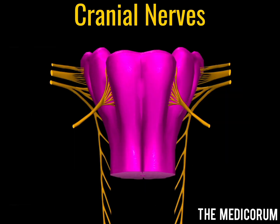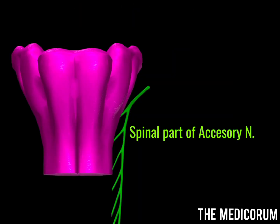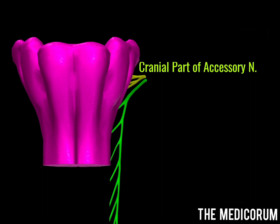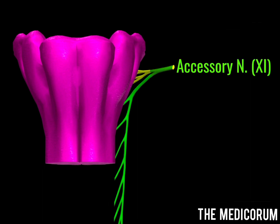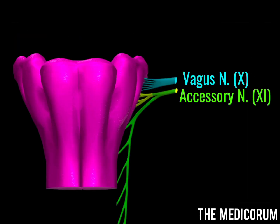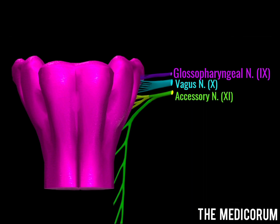Medulla oblongata gives origin to many of the cranial nerves. The spinal part of the accessory nerve mostly arises from the spinal cord, but some of its part arises from the medulla oblongata, and the cranial part totally arises from medulla. Both the spinal and cranial parts merge to form the accessory nerve, which is the 11th cranial nerve. Above the accessory nerve we have the vagus nerve, the 10th cranial nerve, and above the vagus we have the glossopharyngeal nerve, which is the 9th cranial nerve.